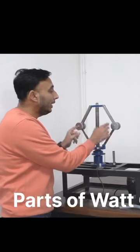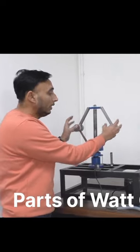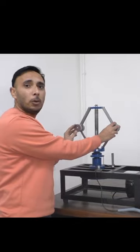This is the working model of a Watt governor. These are the arms. This is the ball. This is the mass of the ball.